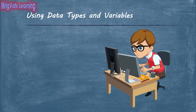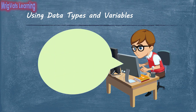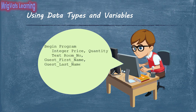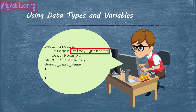Before you use a variable in a program, you must declare it. This means the program creates the variable as soon as the statement is run. You can either declare a variable at the beginning of the program or just before you need the variable. To declare a variable, you use a data type followed by the variable name. In most programming languages, you can create multiple variables of the same data type in a single statement.